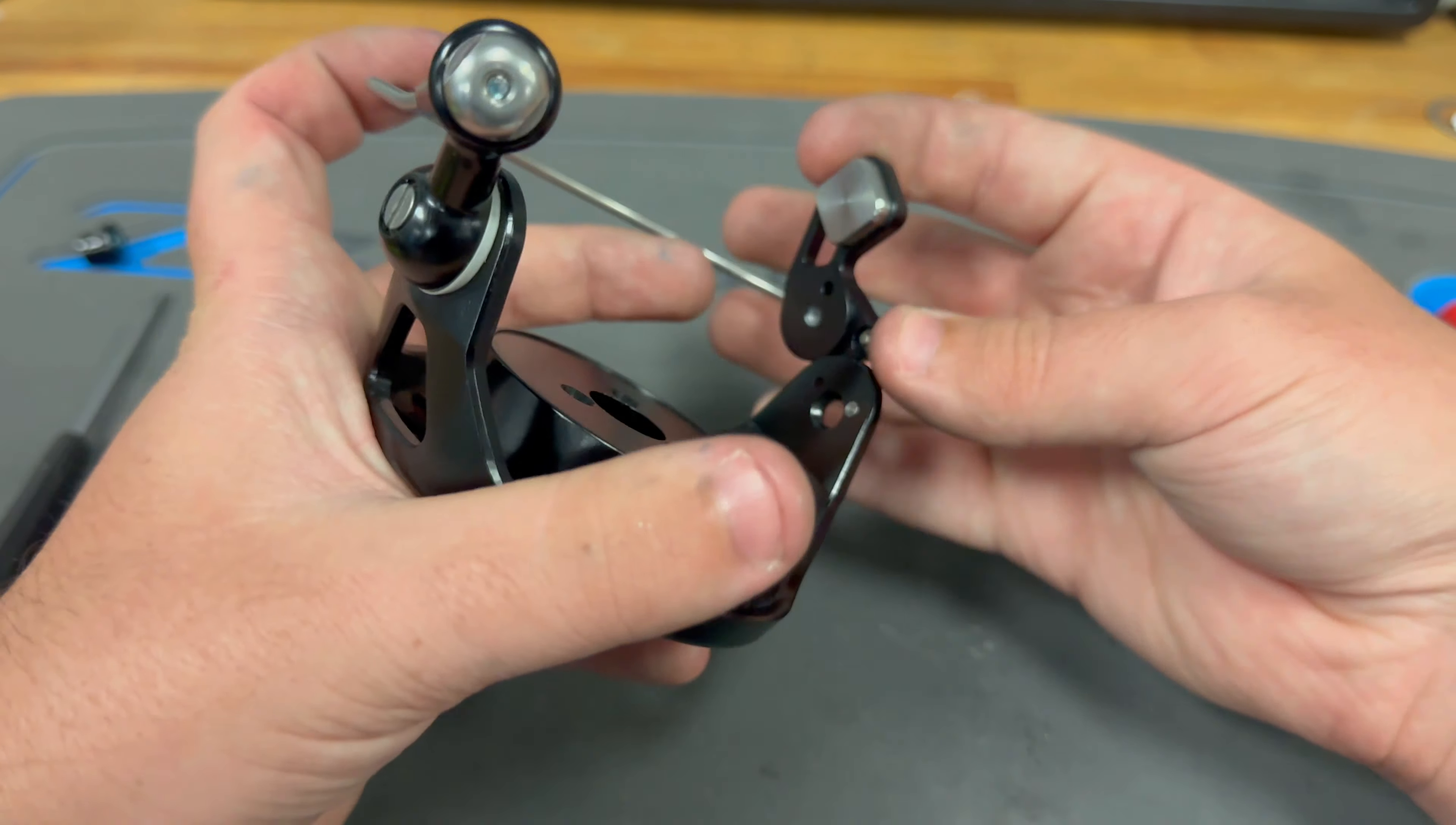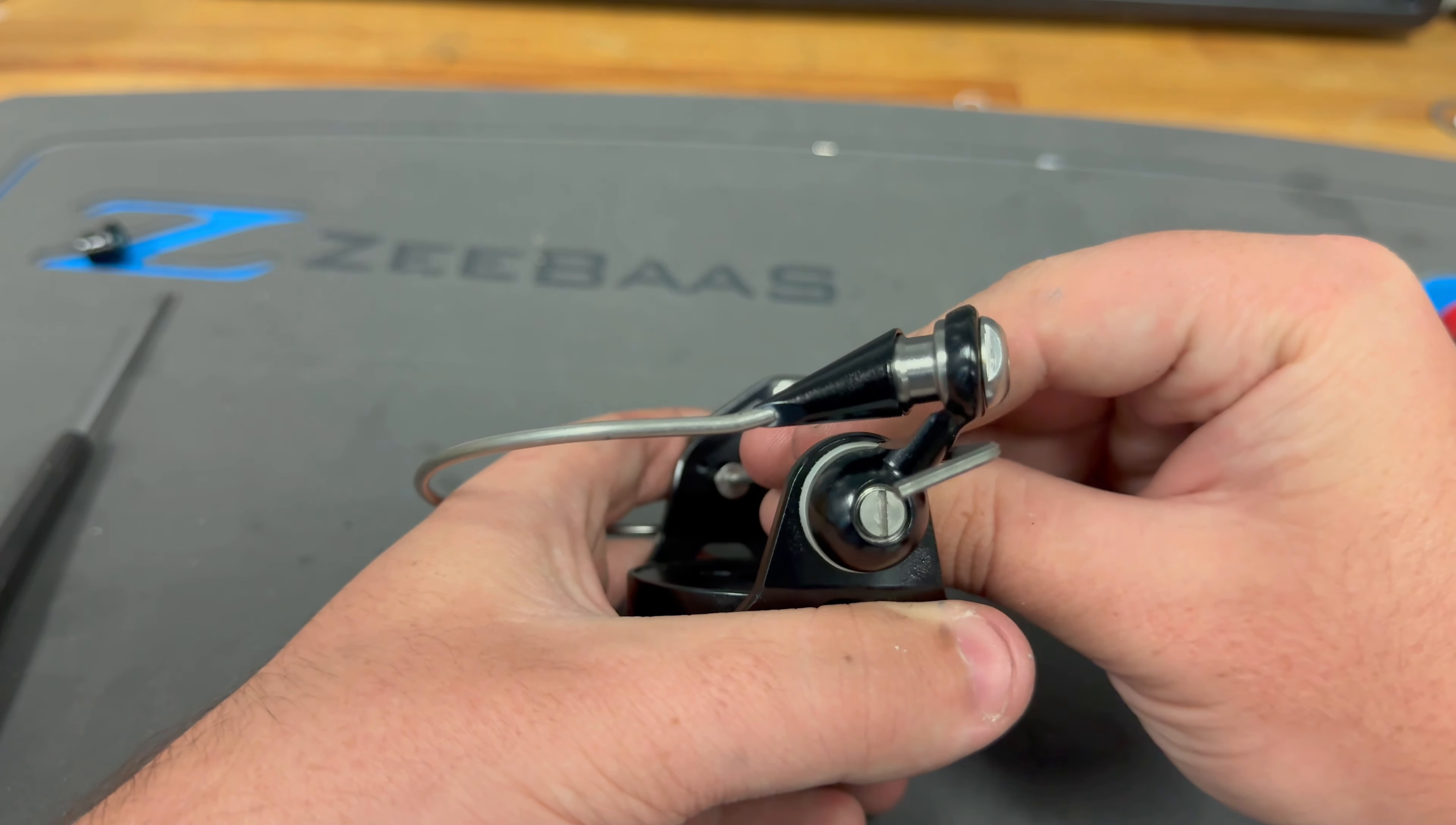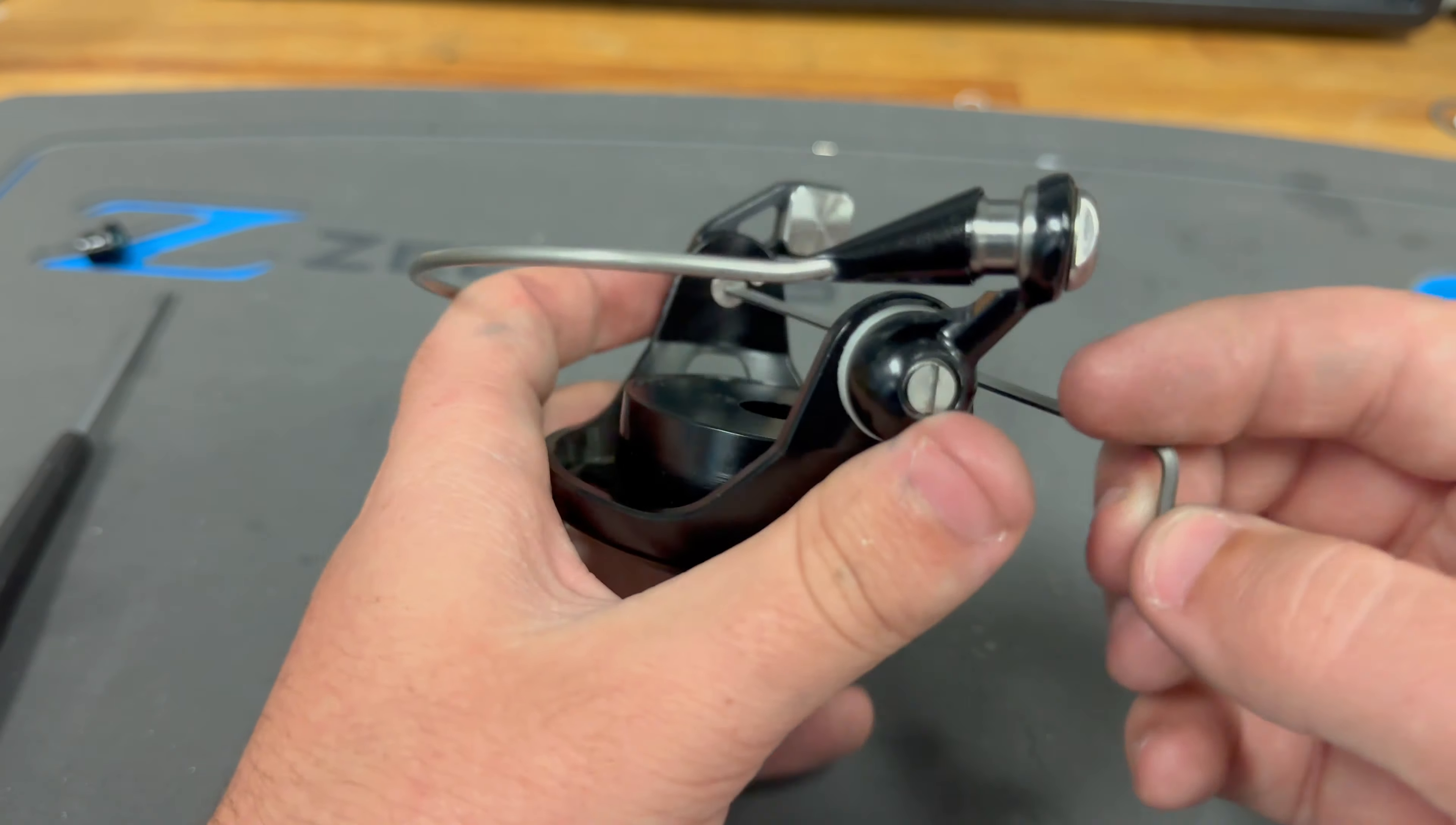Now, you want to take this counterweight back here. And you see there's a little pin here, and a pinhole here. And you want to line that up. It should step right into place when you get it just right. And then turn that until it sits flat. You want to take your old screw head, push it back into here. And screw this back into place. You want to make this screw pretty tight.